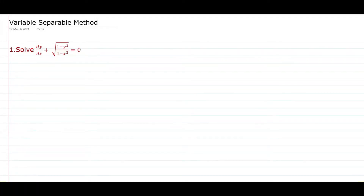Hi guys, welcome to Raman channel. Today we will discuss about variable separable method problems. First problem: solve dy/dx plus root of (1 minus y square) by (1 minus x square) equal to 0.